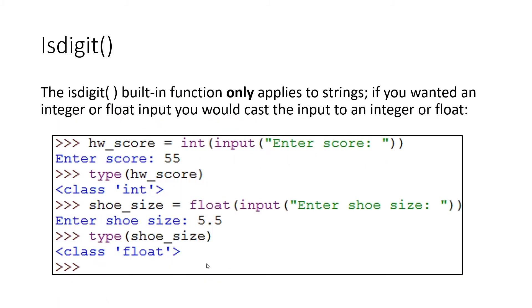Bear in mind, these are always checks on strings — they're not checking on numbers. So don't cast or convert them first before you do these checks, otherwise it's not going to work properly. Check if it's digits, and if you're happy that it's digits, then do your cast to an int or to a float.